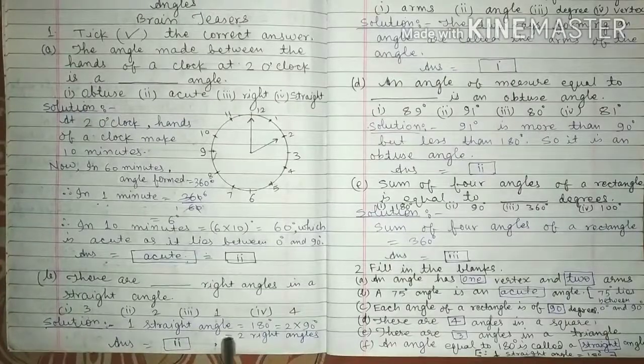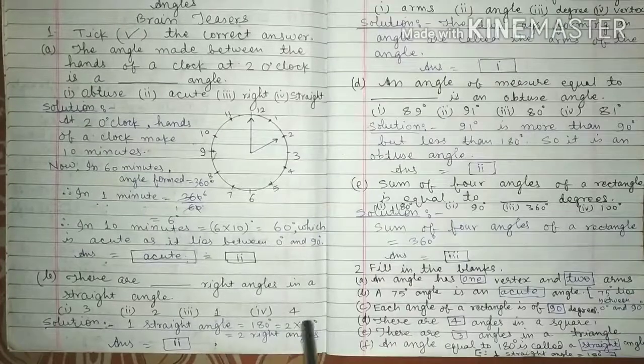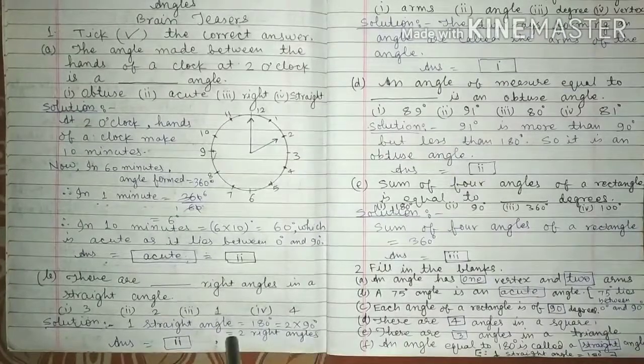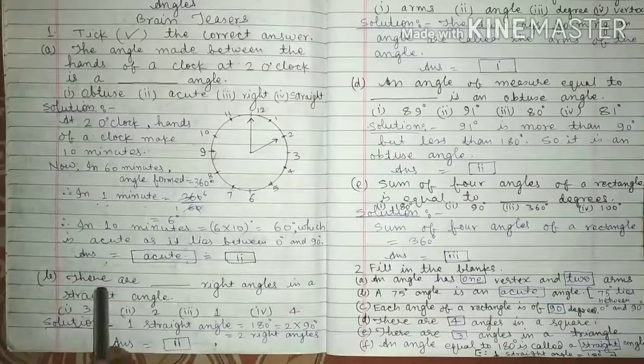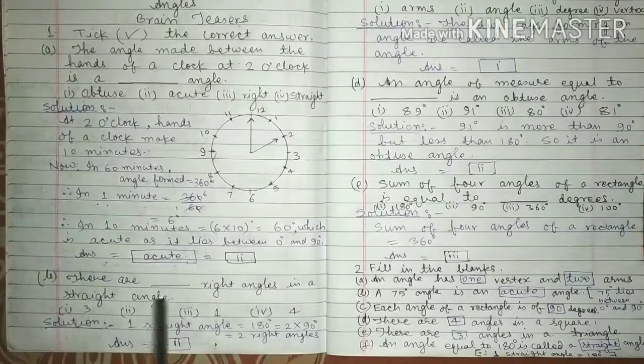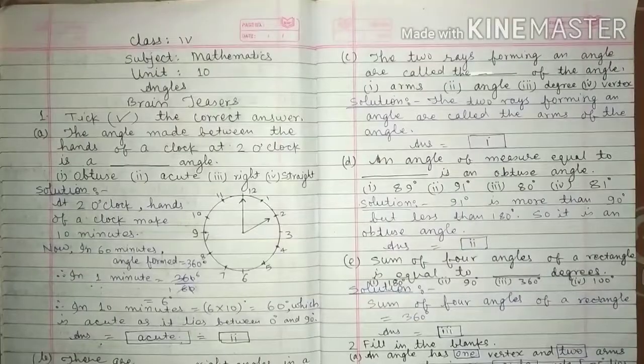1 straight angle equals to 180 degree. 180 degree can be written 2 into 90 degree. 90 degree means right angle. This equals to 2 right angles. So we fill here 2 right angles. So there are 2 right angles in a straight angle. So answer is 2.